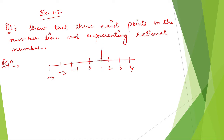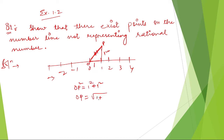We are going to draw using compass and all those things. You are going to draw a line of one centimeter — the same distance as zero to one — and then draw another line perpendicular to it. If both sides are 1, then by Pythagoras theorem: OP² = 1² + 1², so OP = √(1 + 1) = √2. So this line OP will be √2.